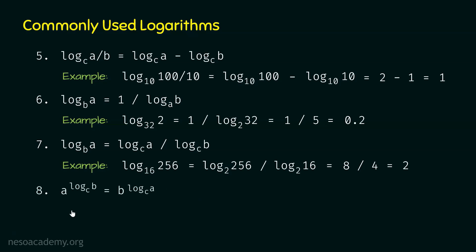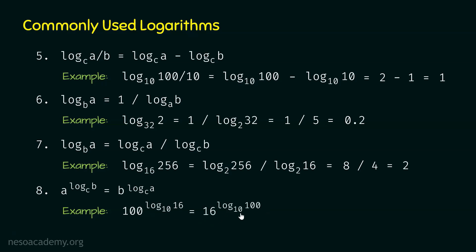The eighth logarithm is A power log B base C equals B power log A base C — we can switch A and B. For example, 100 power log 16 base 10 can be written as 16 power log 100 base 10. Since log 100 base 10 is 2, we get 16 power 2, which equals 256.